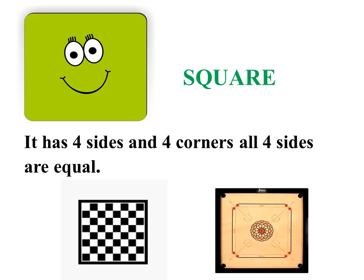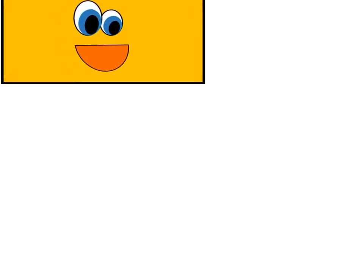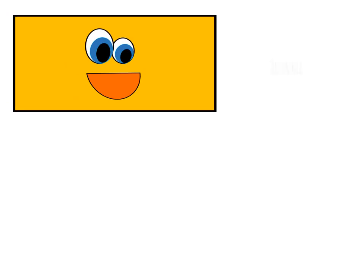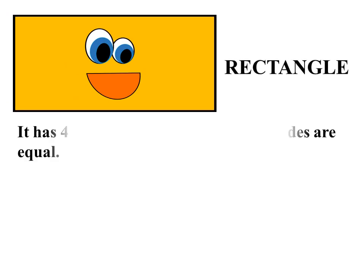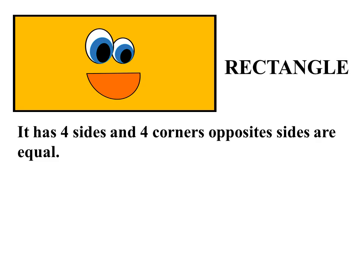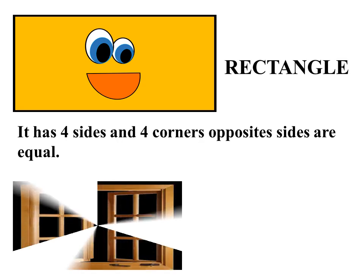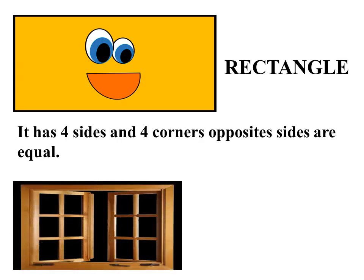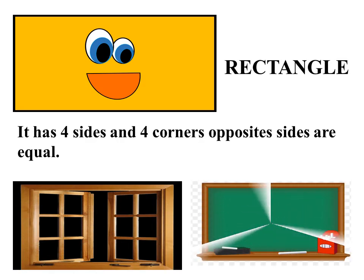Shall we see one more shape? What shape is this, dear? It is a rectangle. It has four sides and four corners, and opposite sides are equal. Will you see a few examples from your school classroom? Yes — a window and a board are examples of a rectangle.